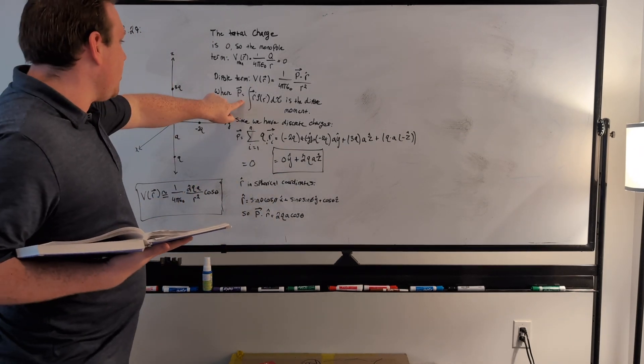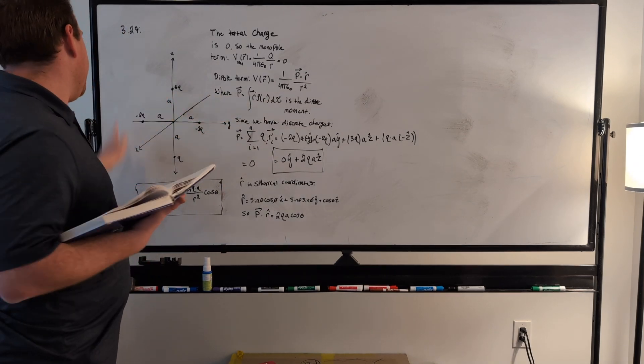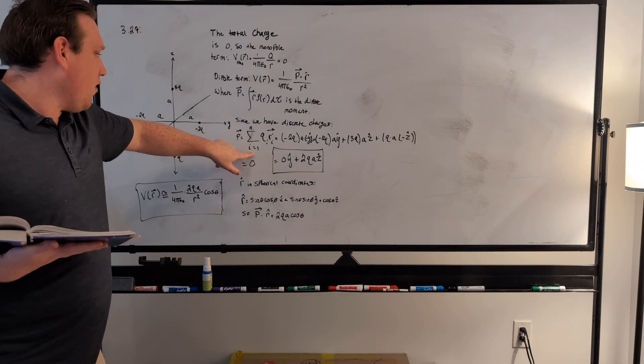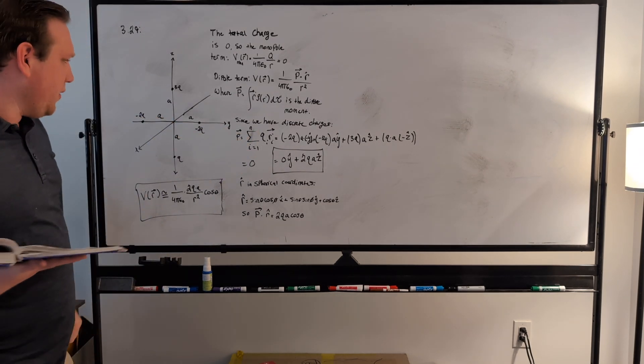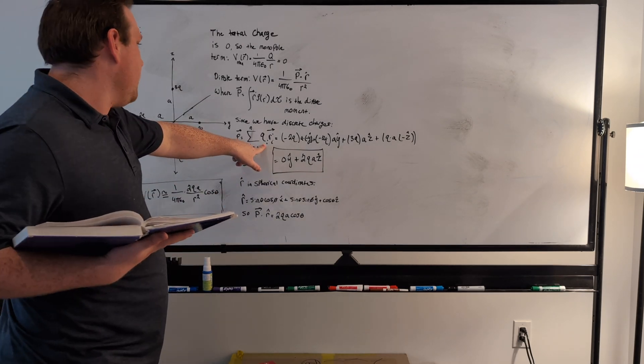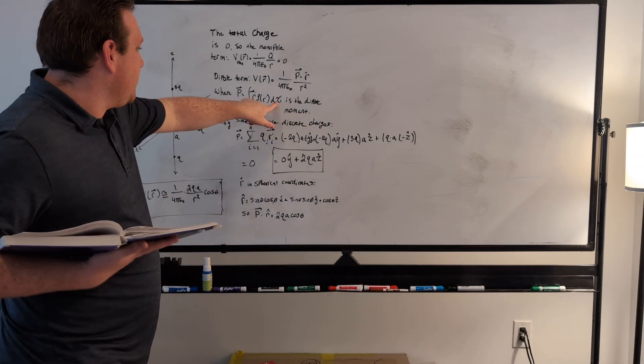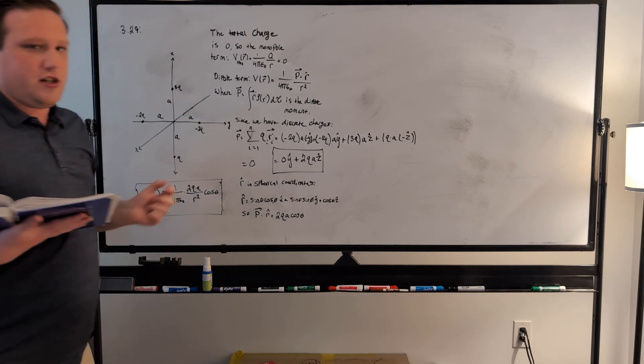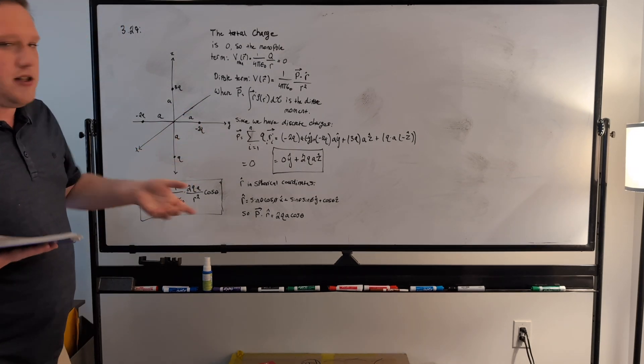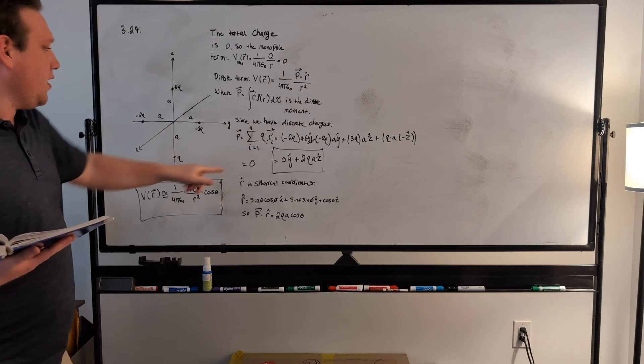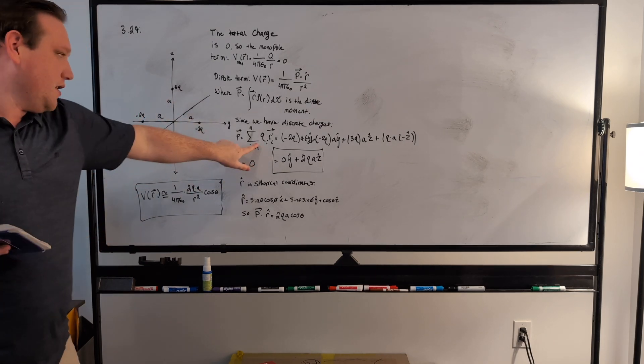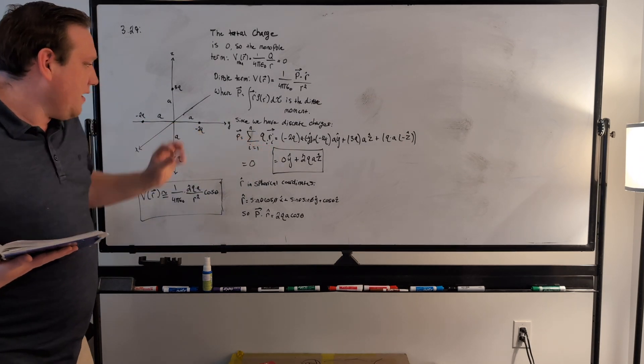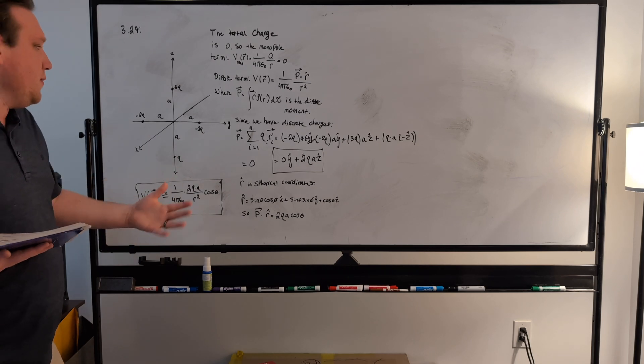And instead of an integral here, we can use a sum because we have discrete sets of charges, so really our dipole moment can be expressed as a sum over one to however many charges we have of the i-th charge, because rho times tau is the charge density times the volume, the infinitesimal volume, which is just the charge. So in this case of discrete charges, it's going to be the charge times r-prime, so each of those are the i-th terms of the sum.